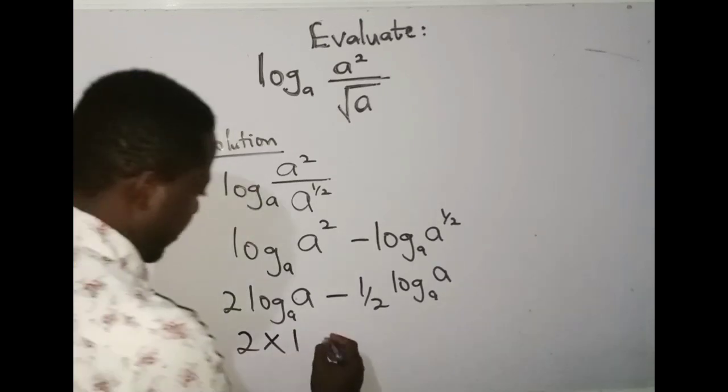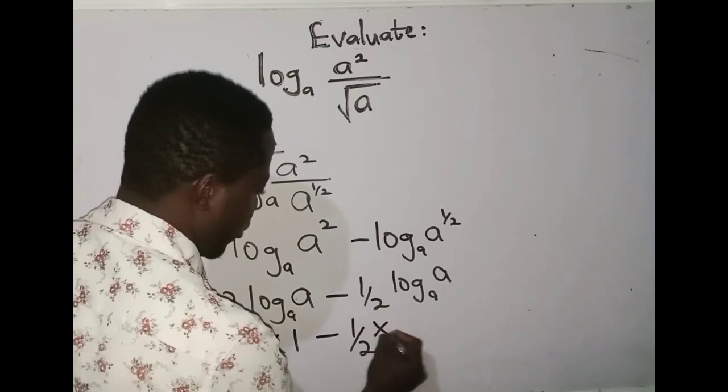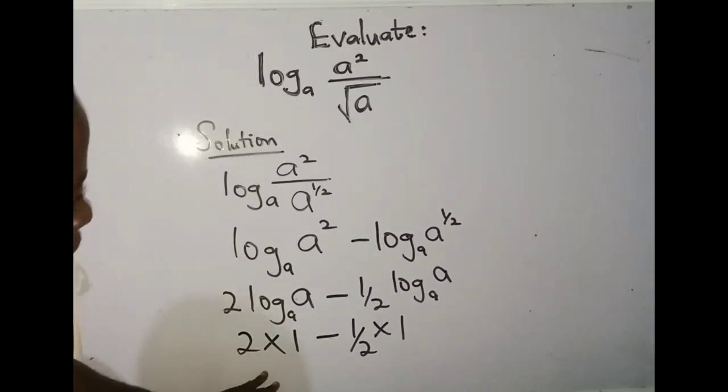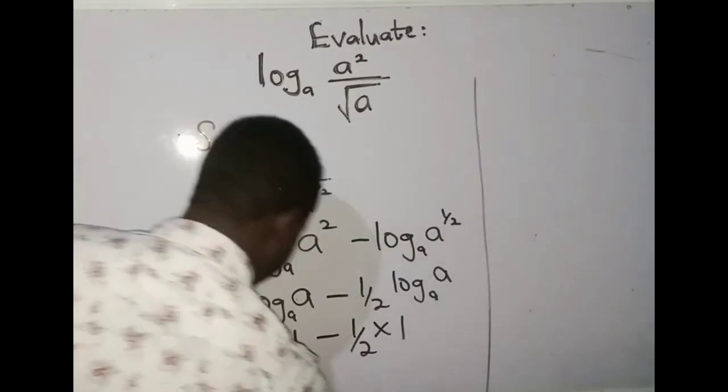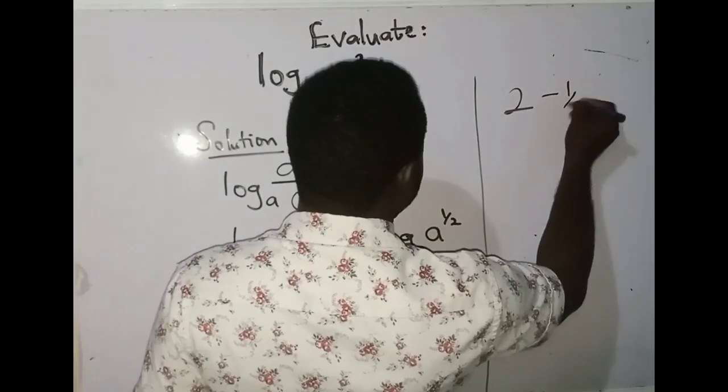So I'm going to have 2 multiplied by 1 minus 1/2 times 1. The base and the values are the same. Now, the next thing is to say 2 times 1 is 2, minus 1/2 times 1 is 1/2.